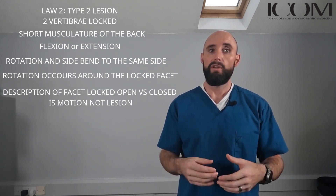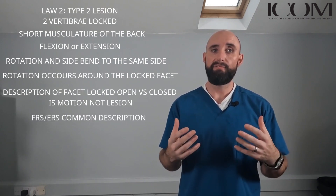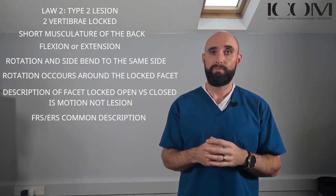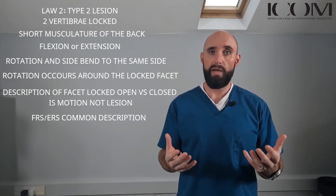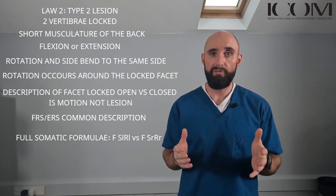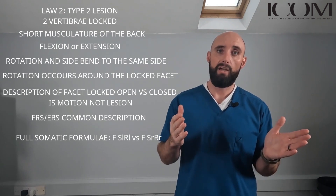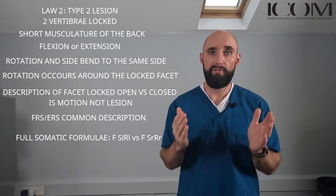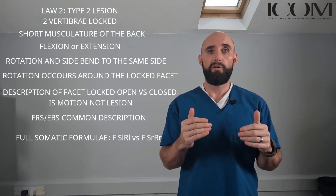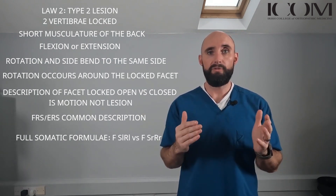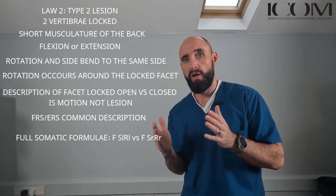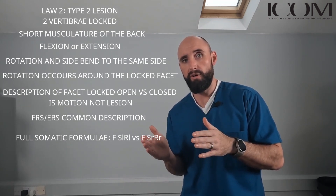This can be written as F or S or E or S. As a full equation it could be written as F, SL, RL — flexion, side bend left, rotate left. For the opposite it would be flexion, side bend right, rotate right — written as F, SR, RR.